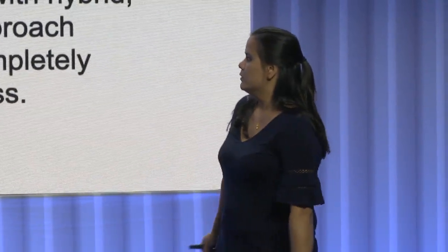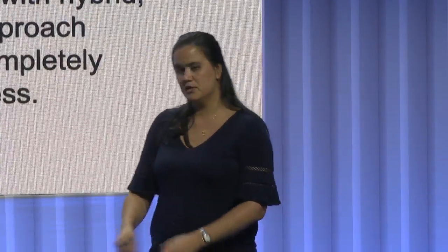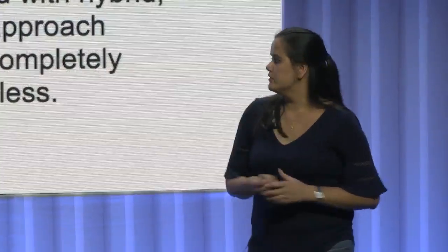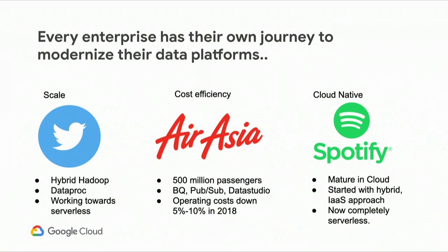A couple of big customers are using solutions like this. Twitter is using it to help them scale — they have a hybrid Hadoop and Dataproc cluster and are working towards a fully serverless environment on Google Cloud. Air Asia, with 500 million passengers, is using BigQuery, Pub/Sub, and Data Studio, and has been able to reduce costs with those tools. Spotify is cloud-native and has implemented these solutions as well.